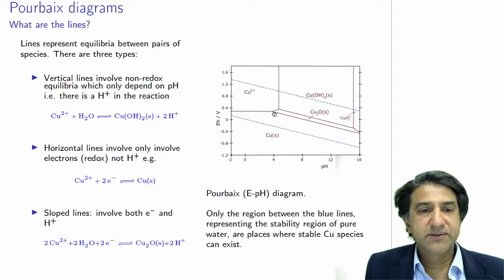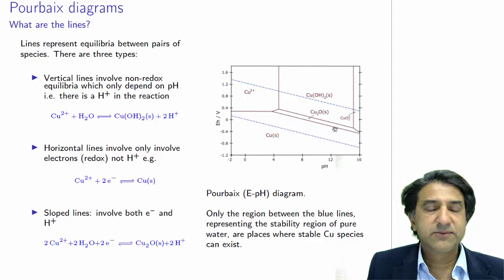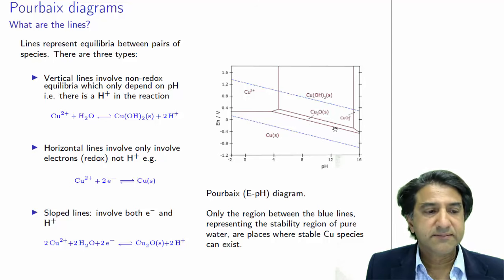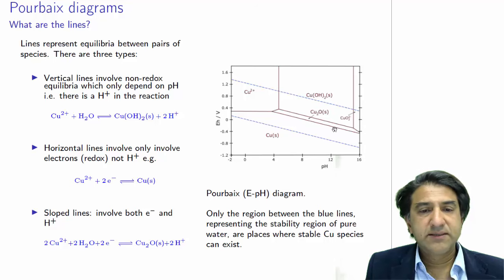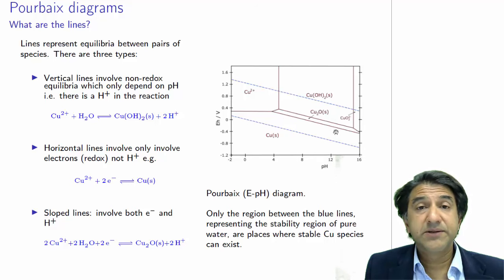And you can see it's sloped upwards, which is interesting. Normally we have sloped lines sloping this way, and we'll see why that is in a second. So sloping lines indicate reactions which depend on both electrons and protons, a particular half reaction. Their equilibria, the points at which equilibrium occurs, can be changed by pH and simultaneously voltage.